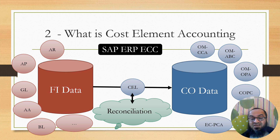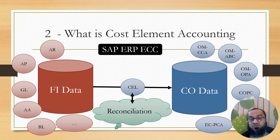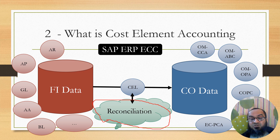Cost element accounting was one of the modules in Controlling which connects the data of Financial Accounting to the data of the Controlling module. The data from the Financial Accounting module flows to the Controlling module — these were two separate logical data repositories — and this flow was made through cost element accounting. It was the first module through which data was imported into Controlling from Financial Accounting, and one of its purposes was to ensure the two datasets were reconciled.